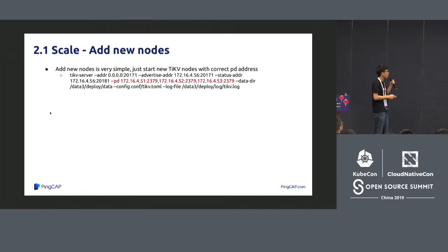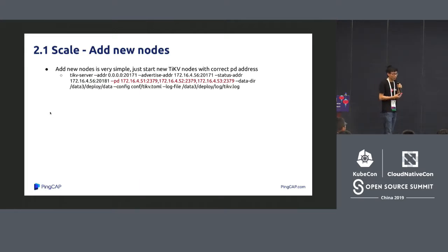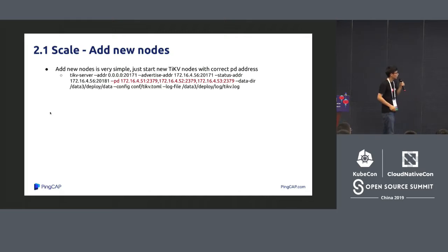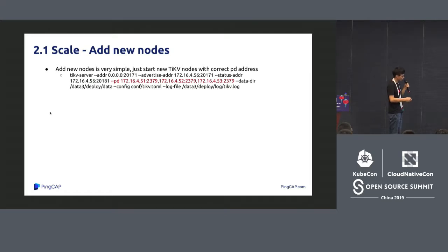Adding a new node is very simple — just start a new TiKV node pointed at the PD address and it is automatically added to the cluster. Compared with traditional databases that require complex data migration to scale, TiKV makes this trivial. The goal is to liberate productivity so teams don't waste time on manual scaling operations.